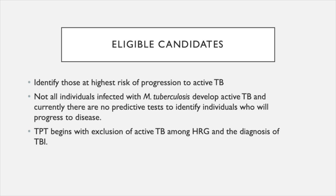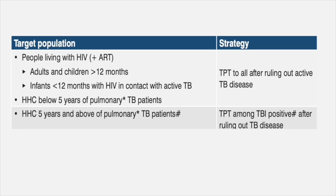The eligible populations are those at the highest risk of progression. Though everybody exposed to the infection may not develop active TB, and there are no sure-shot tests to tell who will develop active TB, we have to rule out active TB among all household contacts. Patients living with HIV who are on ART are the ones very likely to develop active TB disease — any infant less than 12 months or an adult exposed to an active TB patient who has HIV must receive preventive therapy after ruling out active TB.